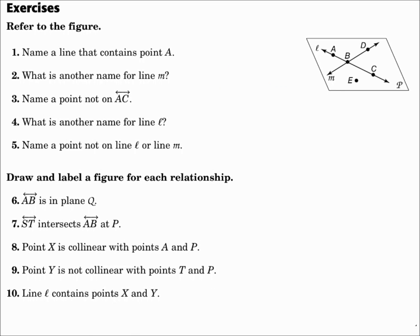Number 3. Name a point not on line AC. Well, there's line AC. You have two choices, point D and point E.